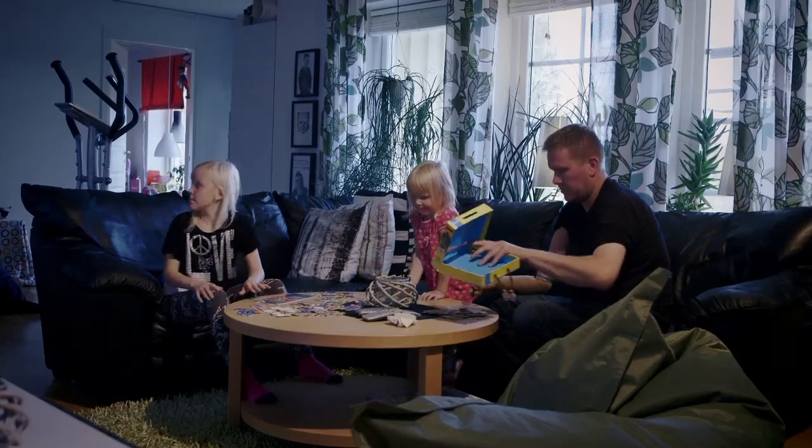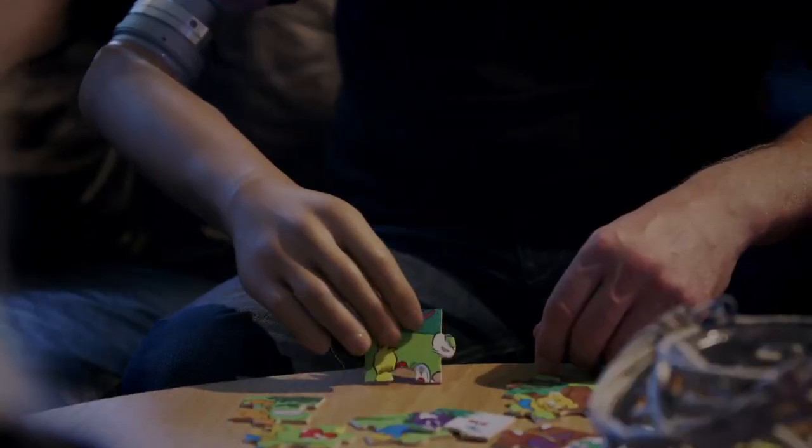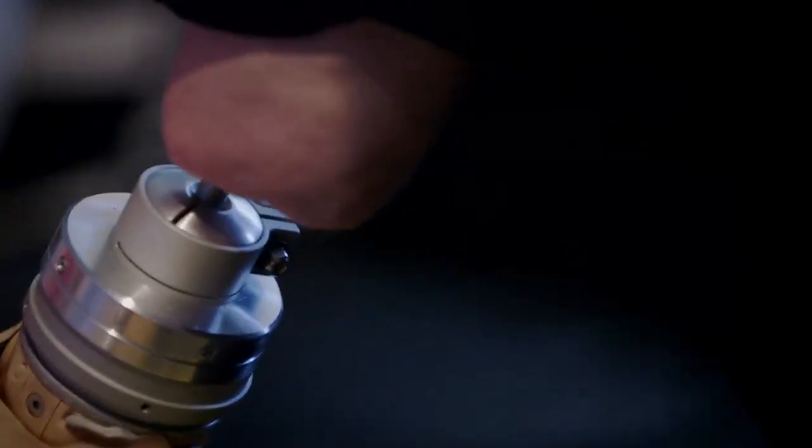With his prosthetic hand, Magnus controls movements with signals from his brain. If he wants to pick up a jigsaw piece, the hand responds.